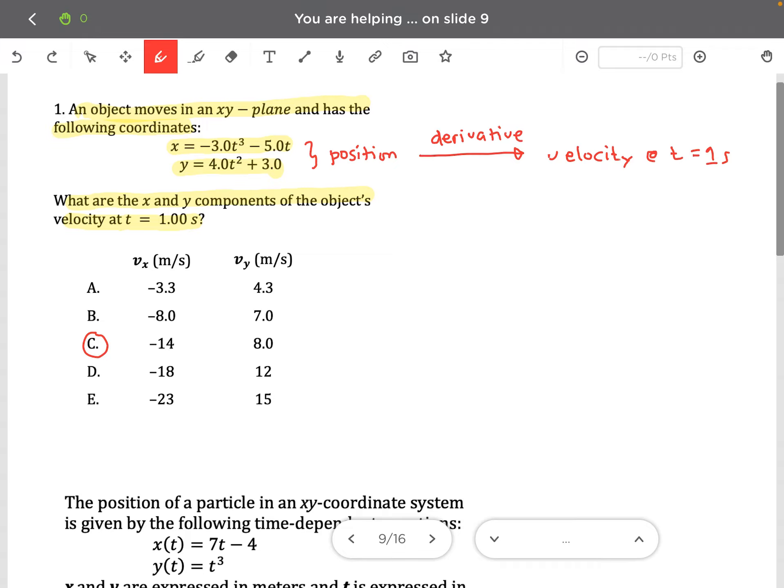To obtain the x component of the velocity, we will have to derive the x position. And to obtain the y component of the velocity, we will have to derive the y position and then substitute t is equal to one. This could easily be done in the calculator.